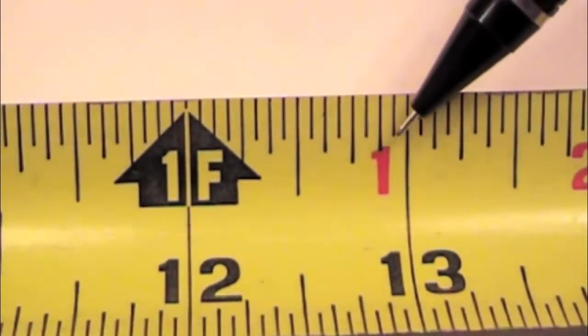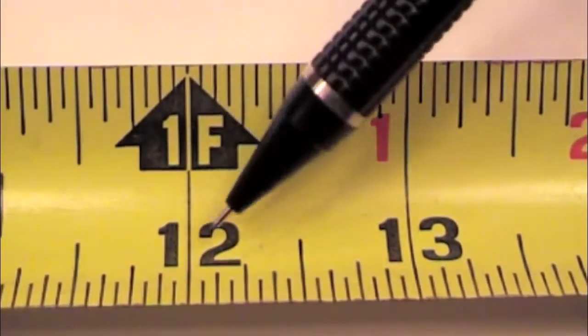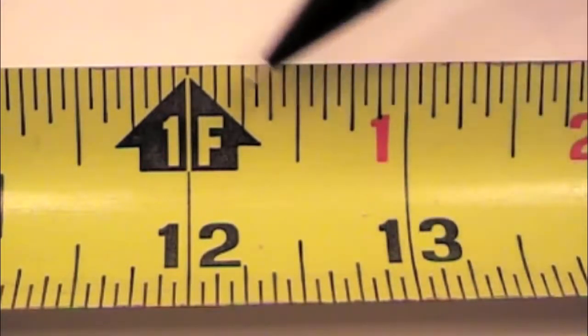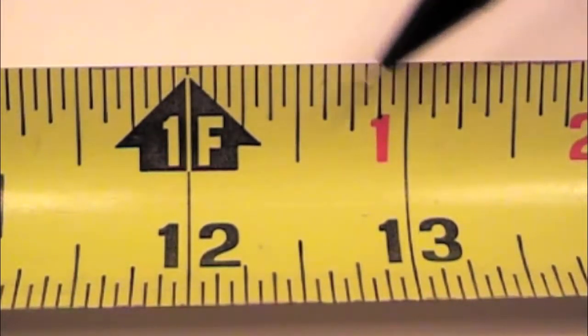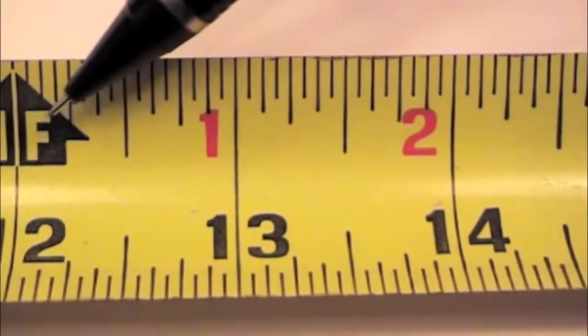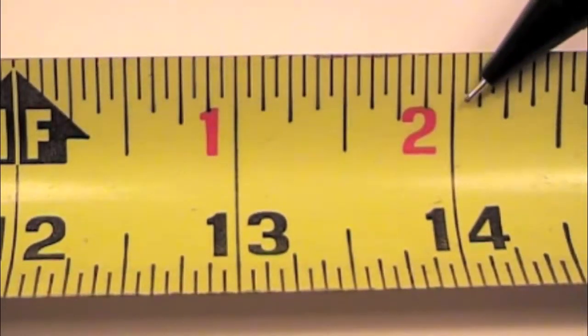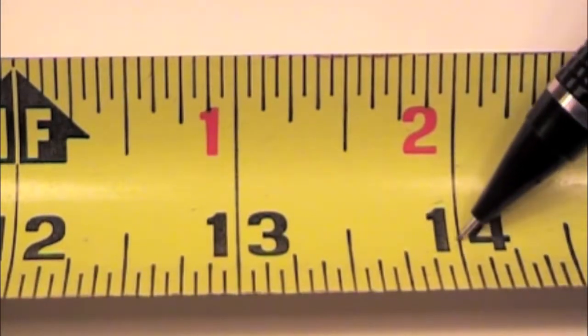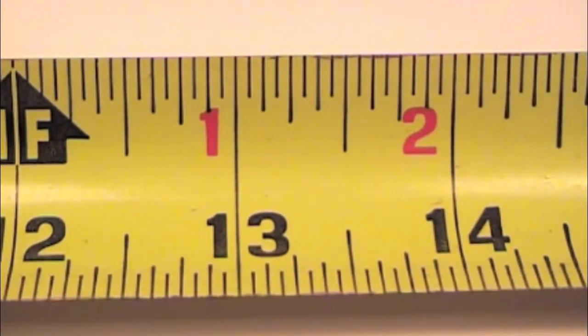So, twelve inches, thirteen inches, or one foot one inch. That continues on to be one foot two inches, or fourteen inches. It depends on what nomenclature you're going to be using: feet and inches, or just inches.